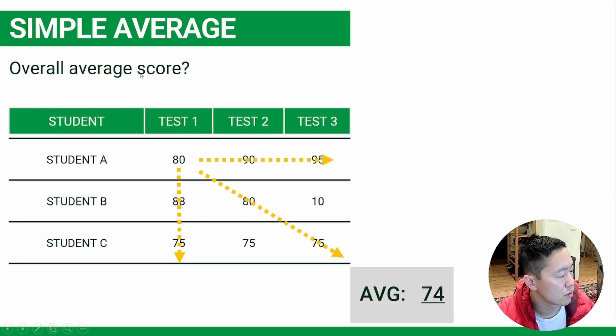If you want to know the average overall score of how everyone did on the test, especially if the tests aren't weighted, then you just add it all up and divide by nine for an average of 74.